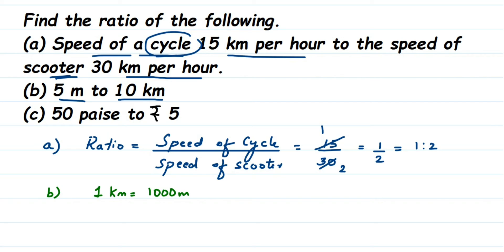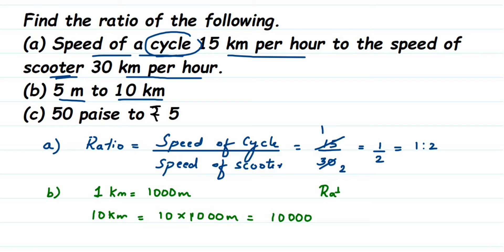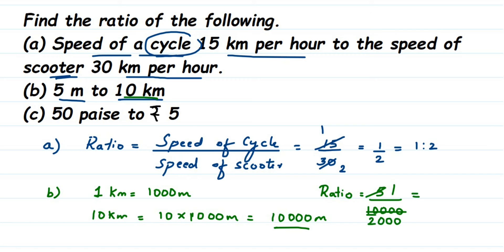If 1 kilometer is 1000 meters, then 10 kilometers will be equal to 10 multiplied by 1000, which is 10,000 meters. Now finding the ratio: it is 5 meters to 10,000 meters, so 5 by 10,000. Cancel them in the 5 table — 5 twos are 10, followed by three zeros gives 2000. So this is 1 by 2000, or written as a ratio: 1 is to 2000.